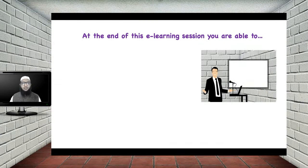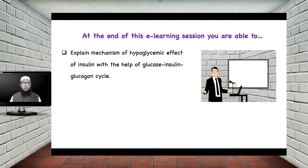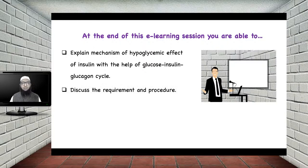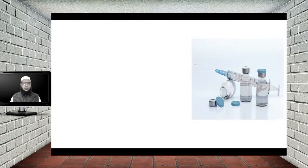At the end of this e-learning session, you will be able to explain the mechanism of hypoglycemic effect of insulin with the help of the glucose-insulin-glucagon cycle, discuss the requirements and procedure, and observe and interpret the result of the experiment.